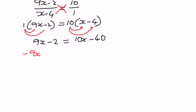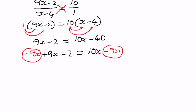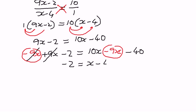Subtracting 9x from both sides: on the left the positive 9x and negative 9x cancel out, leaving us with negative 2. On the right, 10x minus 9x is 1x, or just x, minus 40. So we have negative 2 equals x minus 40.